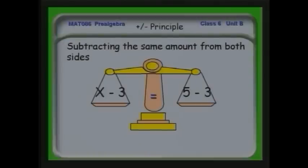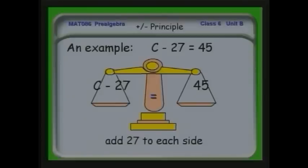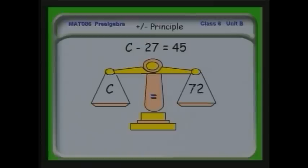Without the balance picture: x minus 23 equals 45. Add 23 to both sides: x equals 68. Check: 68 minus 23 equals 45 — correct. Another example: P plus 56 equals 128. Subtract 56 from both sides: P equals 72. Check: 72 plus 56 — 2 plus 6 is 8, 7 plus 5 is 12 — equals 128. The solution is correct.